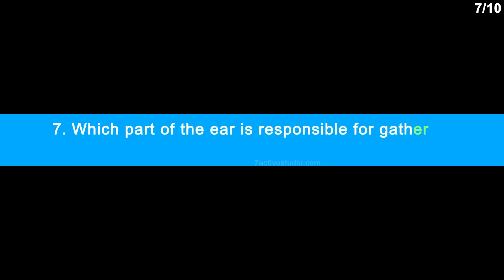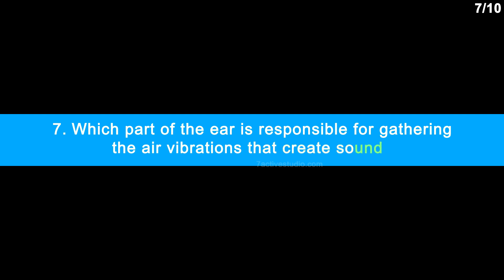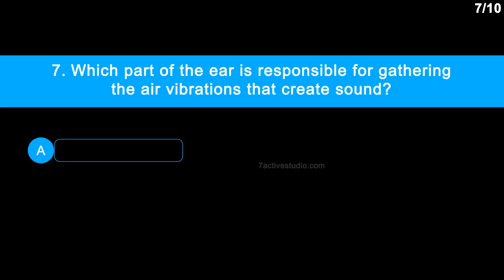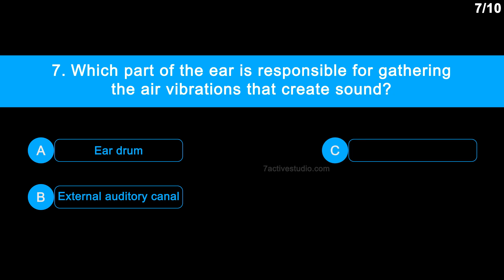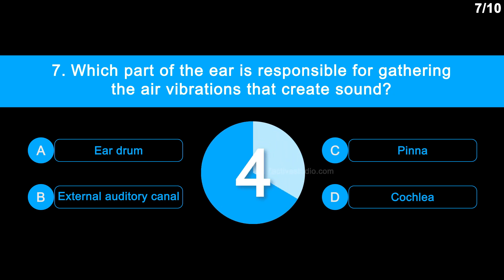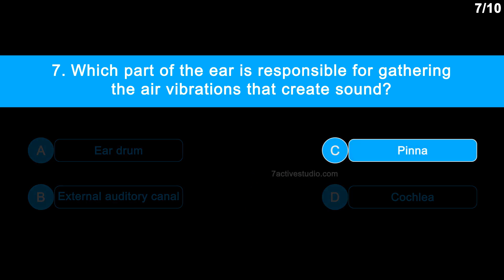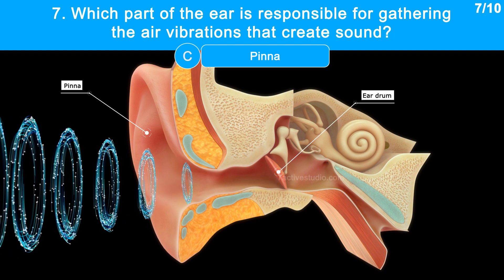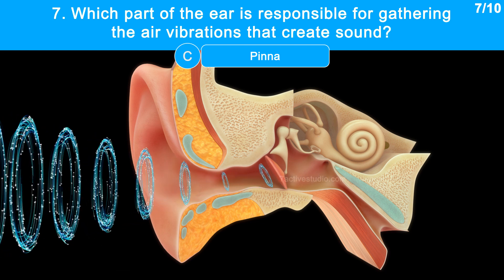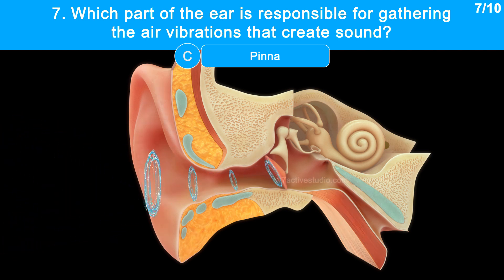Question No. 7: Which part of the ear is responsible for gathering the air vibration that creates sound? Option A: Eardrum. Option B: External auditory canal. Option C: Pinna. Option D: Cochlea. The correct answer is Option C: Pinna. The pinna receives sound waves and directs them to the eardrum through the external auditory canal, and then the eardrum vibrates in response to the sound waves.